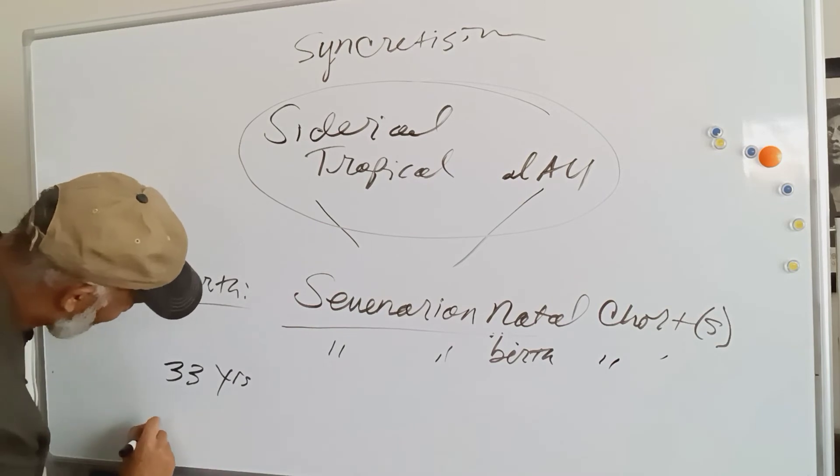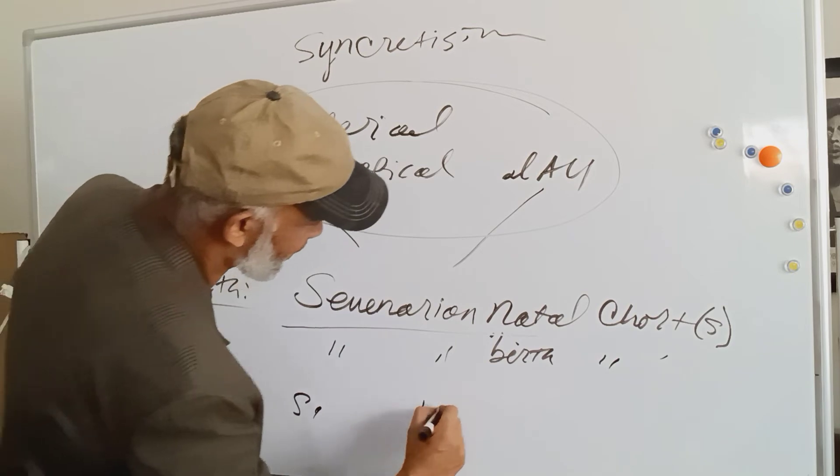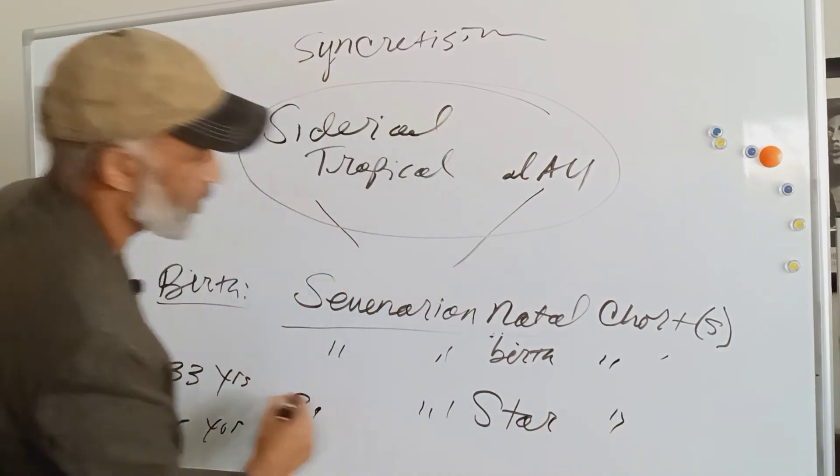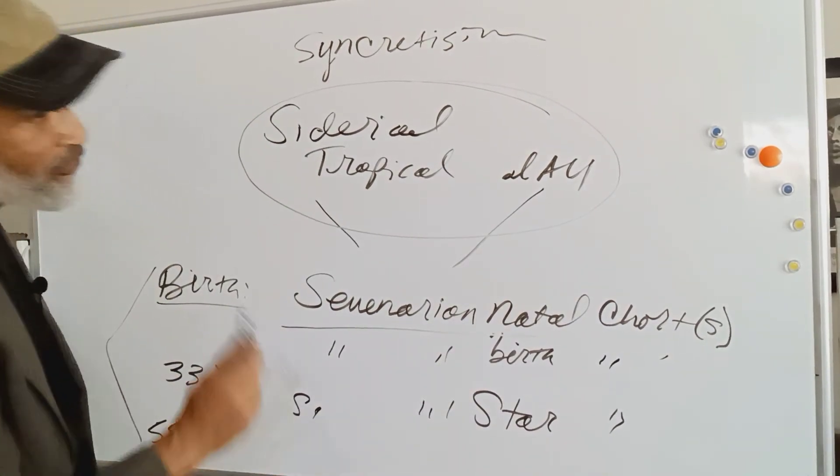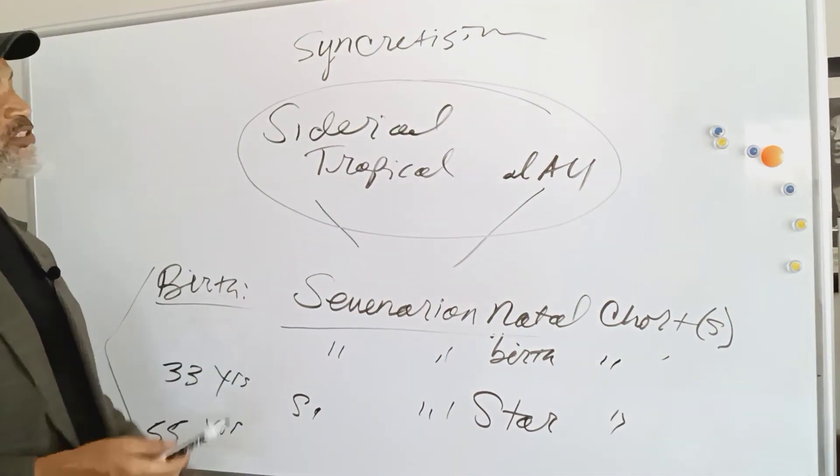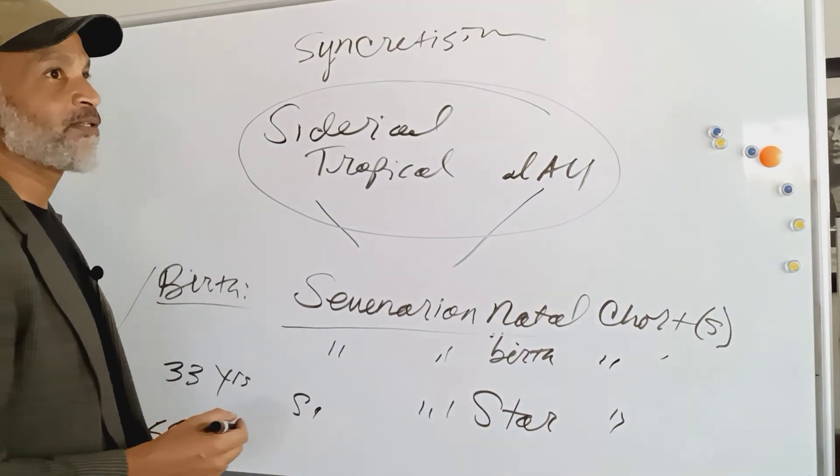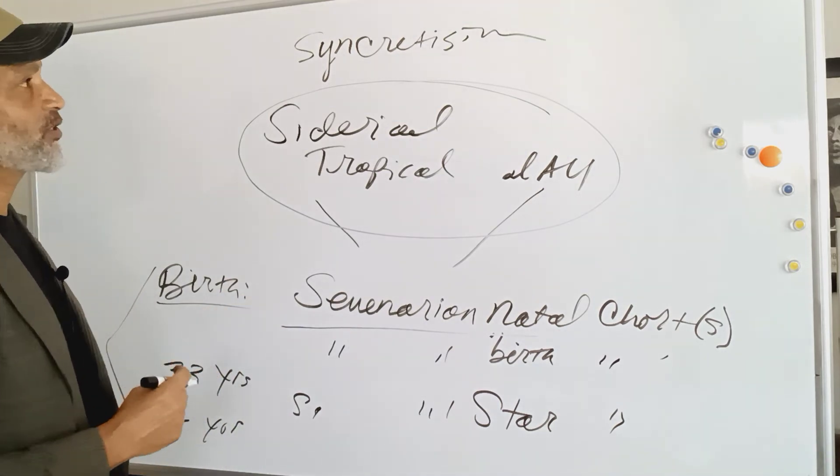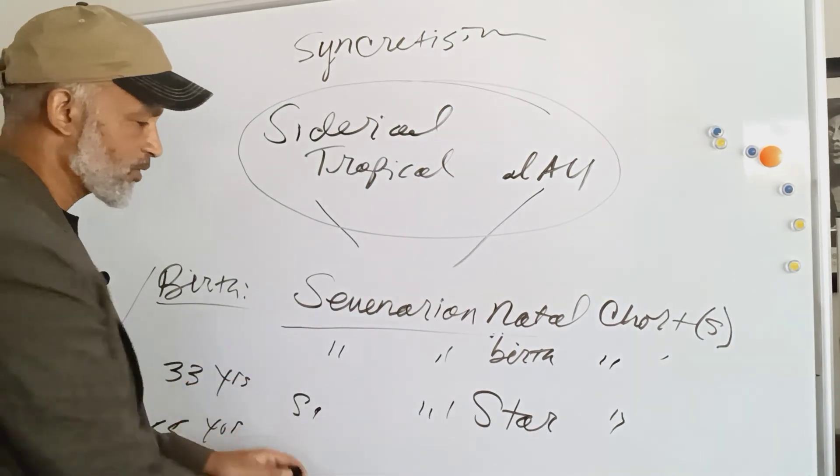And then at 55, you're given the Seminarian star. So three charts throughout your life that guide you, and this is our goal, one of our goals. So people like the great, if I may say his name, Mr. Bonacci, Santos Bonacci, and many other great astrologers and syncretists from around the planet